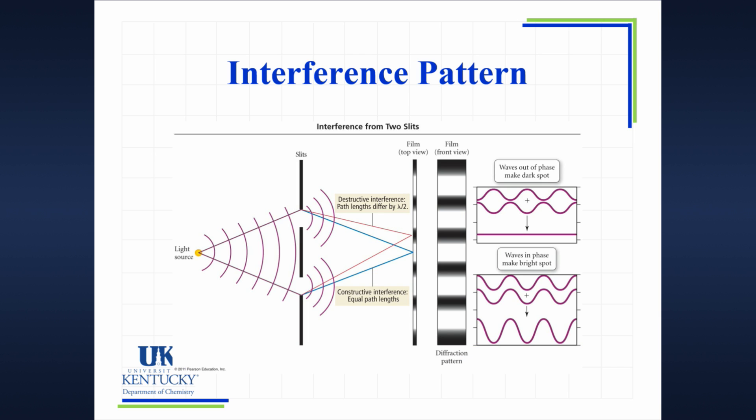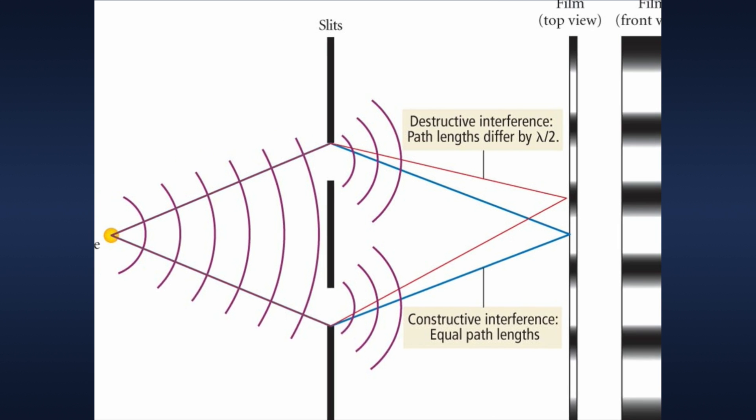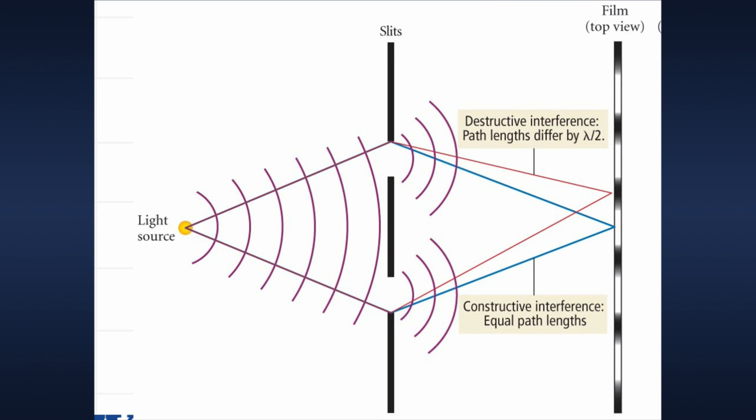So now we're going to put the two concepts together. We have the idea of diffraction and we're going to put it together with the concept of interference. So we have one wave approaching our slits. But now we have two slits. So I'm going to zoom in on just this portion for just a minute.